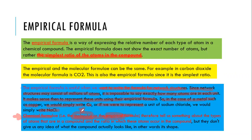Empirical and molecular formulas tell us something about the types of atoms in compounds and the ratio in which they occur. But they do not give us an idea of what the compound actually looks like — its shape. We don't know how copper atoms or sodium and chlorine come together. Like building a wall requires bricks, stones, and cement put together, we need another way to show the shape of molecules at the atomic level.